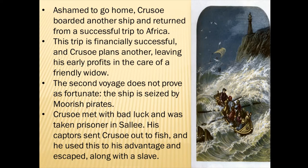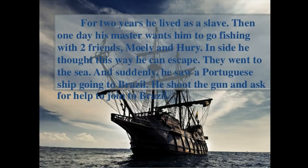However, the next voyage does not prove as fortunate as the previous one. The ship is seized by Moorish pirates, and those pirates sold Crusoe into captivity. Crusoe met with bad luck and was taken prisoner in Sallee, where he lived as a slave for two years. Then one day his master wanted him to go fishing with two friends, Moley and Xury.